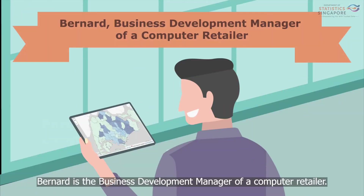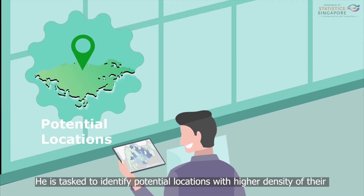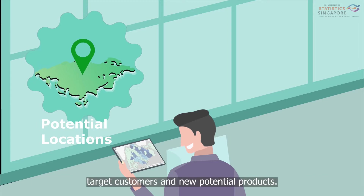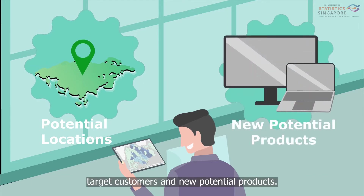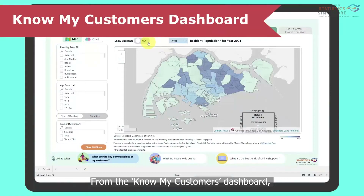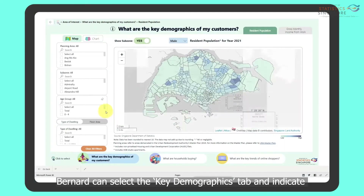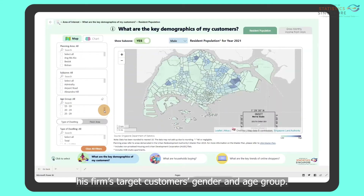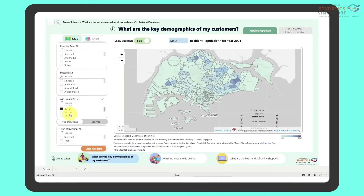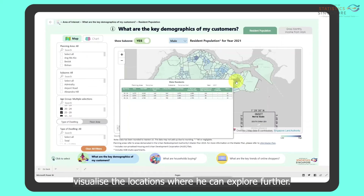Bernard is the business development manager of a computer retailer. He is tasked to identify potential locations with higher density of their target customers and new potential products. From the Know My Customers dashboard, Bernard can select the Key Demographics tab and indicate his firm's target customers' gender and age group. Through the intensity of the heatmap, Bernard can visualize the locations where he can explore further.